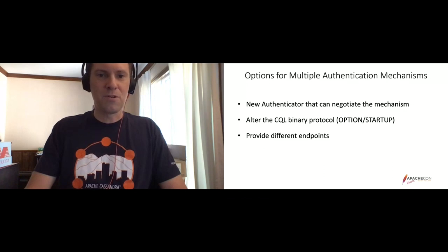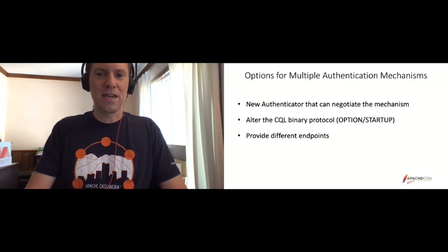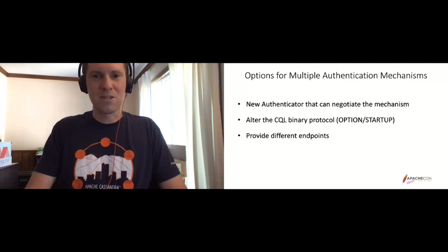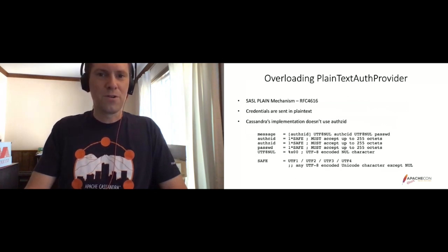Another option would be to alter the CQL binary protocol, where the server can essentially tell clients various options that it supports and the client can indicate which options it wants. A third option would be to simply provide different endpoints, where one endpoint implements one authentication mechanism and a different endpoint implements something else. What we felt was the simplest path for an initial implementation was to overload the plain text auth provider.